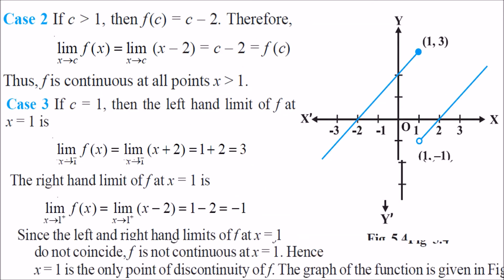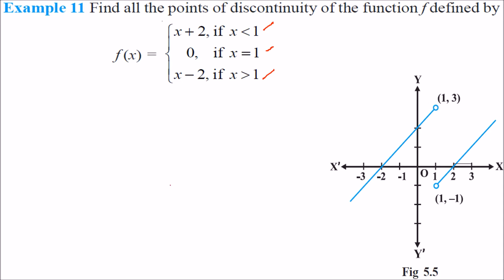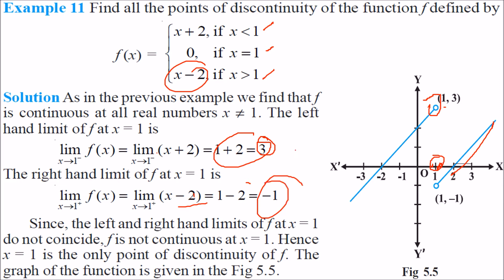Find all points of discontinuity of a similar function. At x = 1, the left-hand limit using x + 2 gives 3, and the right-hand limit using x − 2 gives −1. Since the left-hand and right-hand limits are not equal at x = 1, we conclude that x = 1 is the only point of discontinuity of this function.